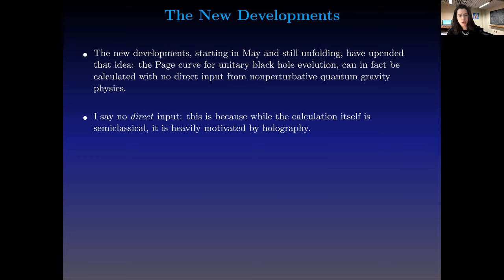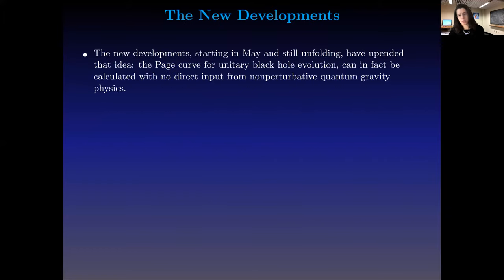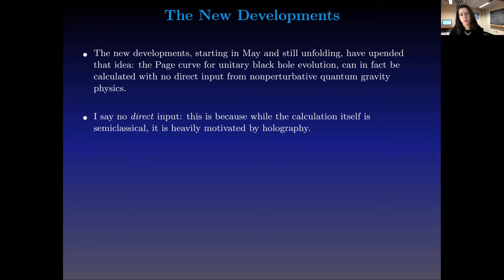I say 'no direct input' with a qualifier: the calculation is semi-classical, but its interpretation and motivation are heavily driven by holography, which one can think of as a non-perturbative formulation of quantum gravity. So what do we know about non-perturbative quantum gravity? We know holography, and we know some things about the Euclidean path integral. It turns out those are actually enough for us to use semi-classical tools to calculate the page curve.